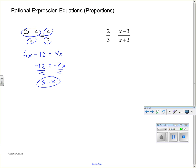Cross multiply on our second example here. 2 times x plus 3 is 2x plus 6. And 3 times x minus 3 is 3x minus 9.